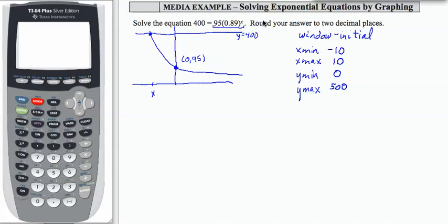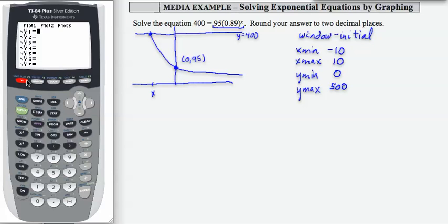I'm going to go over to my calculator, go to y equals, and enter y1 as 400, y2 as 95 times 0.89 to the x power. So I have my two equations entered there.